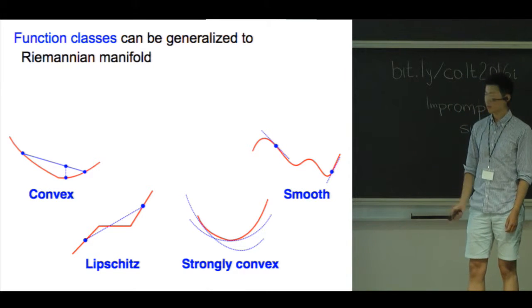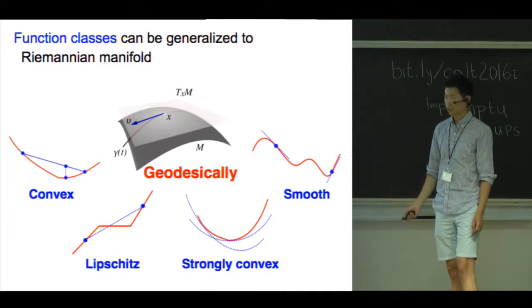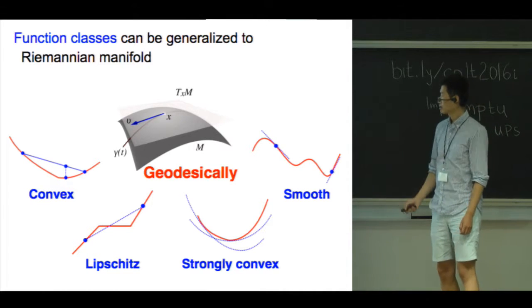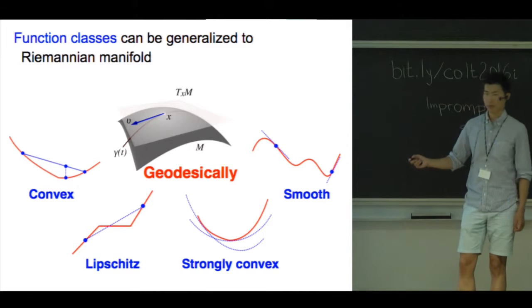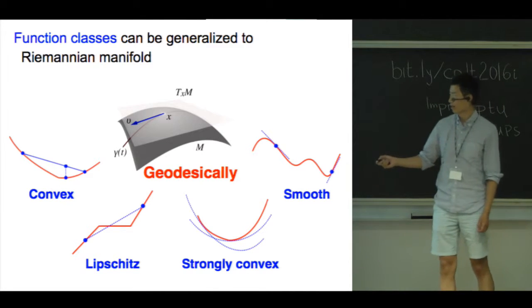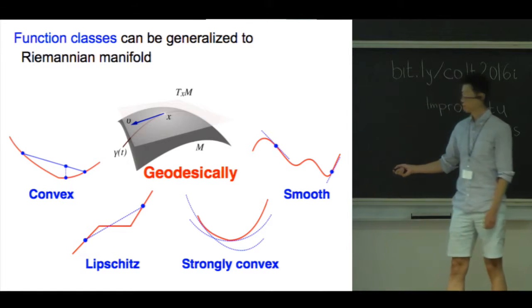Thus, we can talk about function classes on Riemannian manifolds which are geodesically convex, geodesically Lipschitz, geodesically strongly convex, or geodesically smooth.